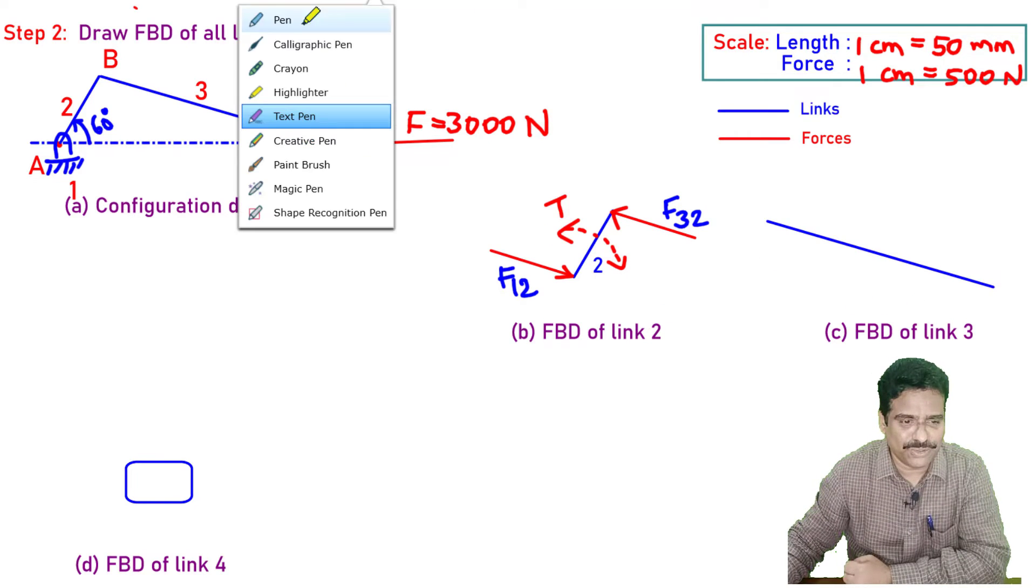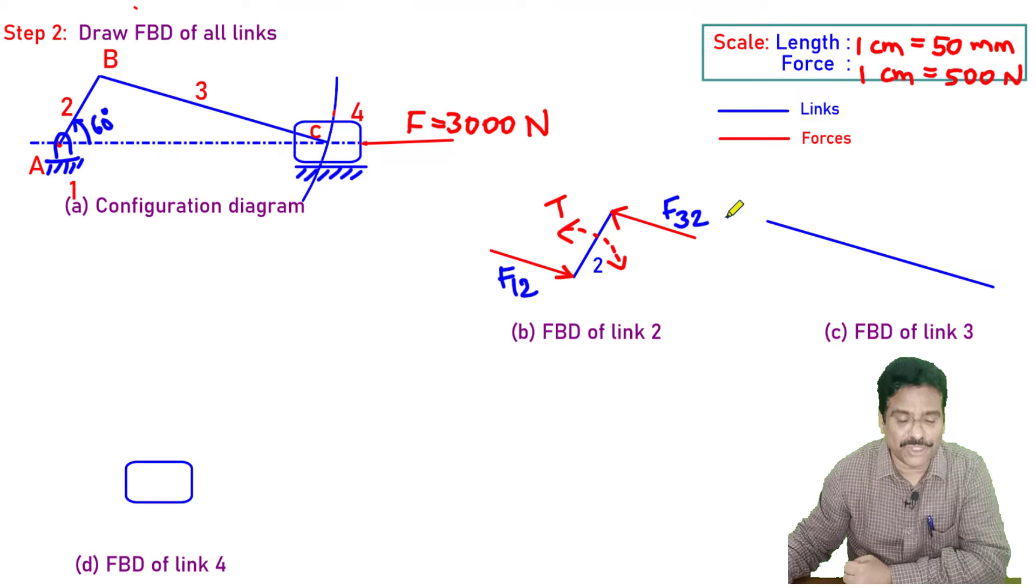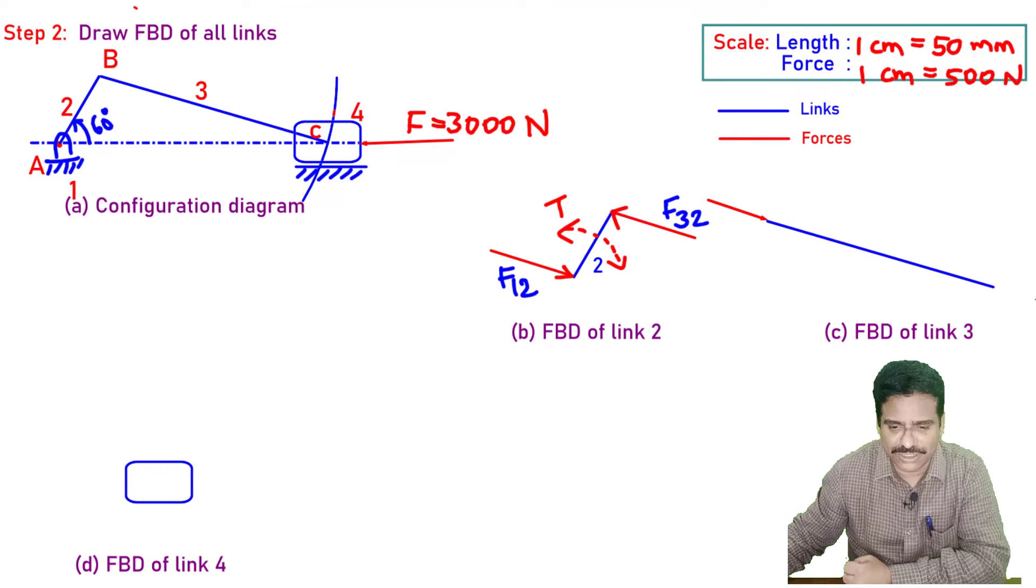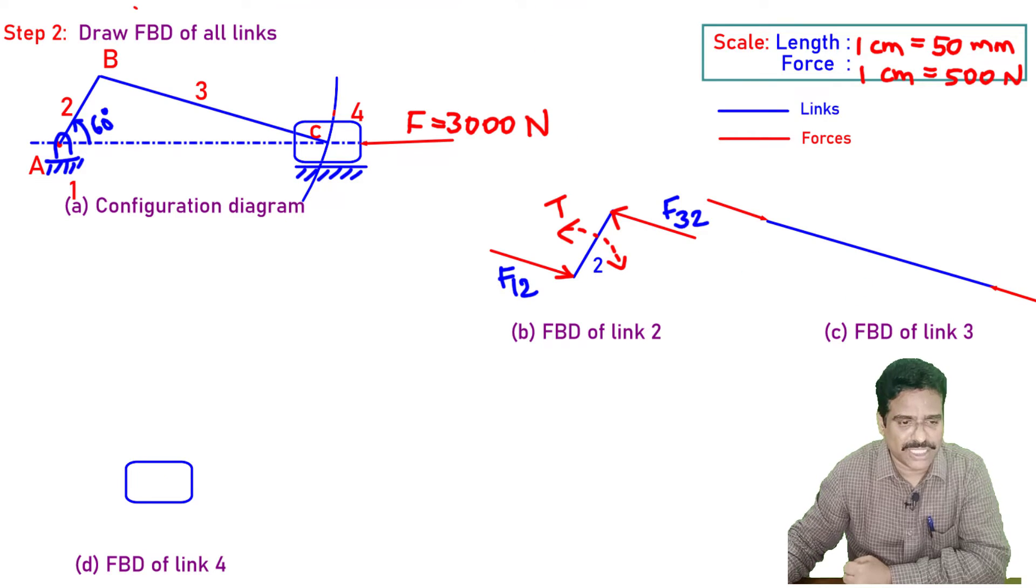Link 3, as you could see, is a two force member. So I will be having a constrained force here. I will be drawing here one constrained force parallel to link 3. Similarly at this end, I will draw a constrained force.